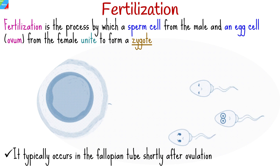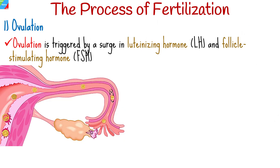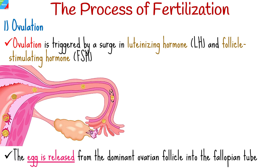Here's a step-by-step breakdown of the fertilization process. Ovulation, a highly regulated process in the female reproductive system, is triggered by a surge in luteinizing hormone and follicle-stimulating hormone from the anterior pituitary gland. The egg is released from the dominant ovarian follicle into the fallopian tube, which usually occurs around the middle of the menstrual cycle.